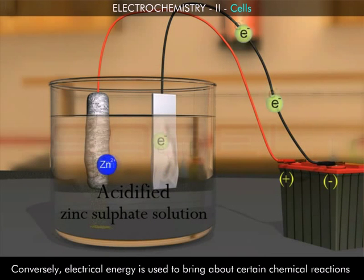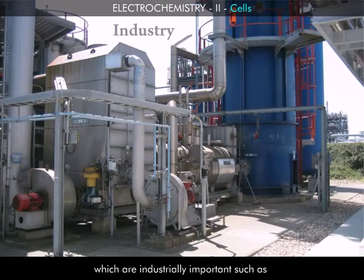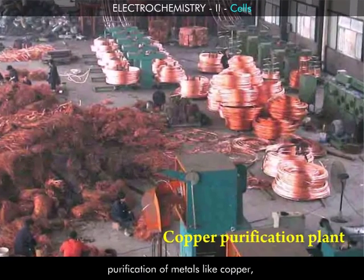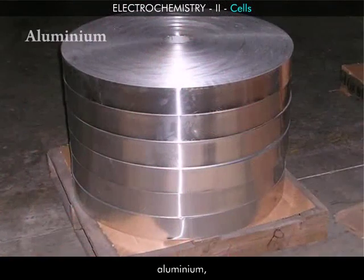electrical energy is used to bring about certain chemical reactions which are industrially important such as purification of metals like copper, aluminium,